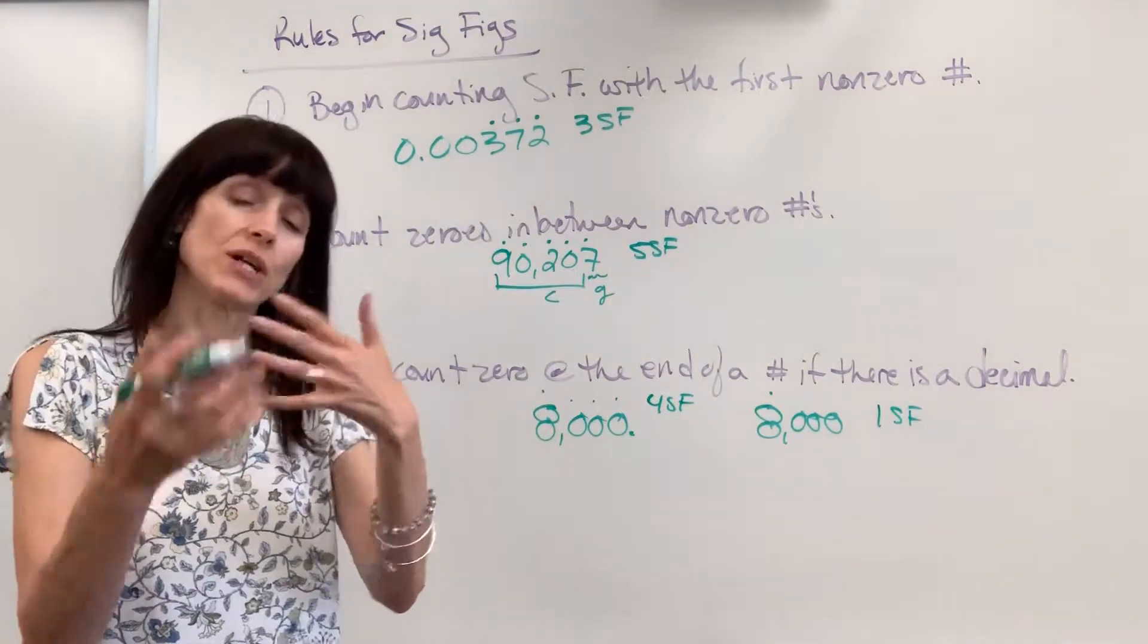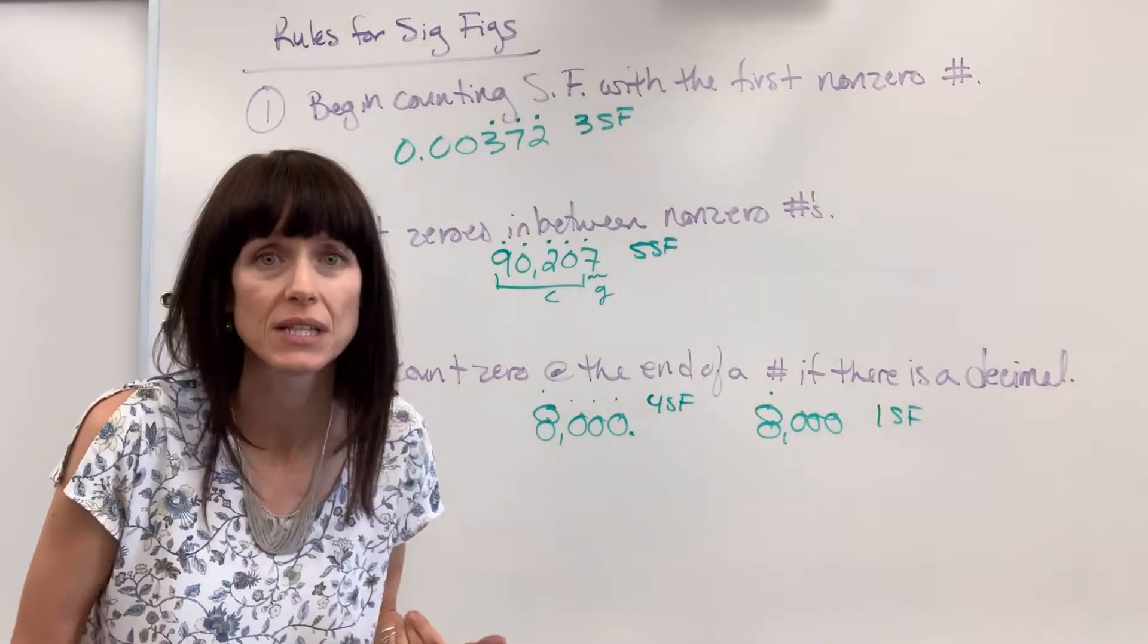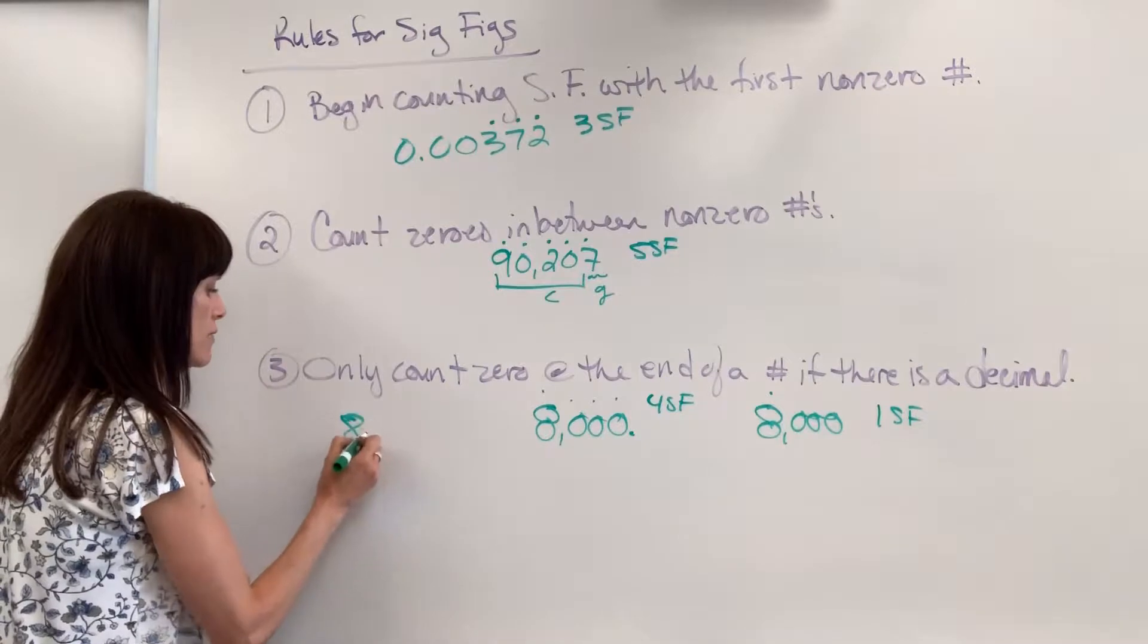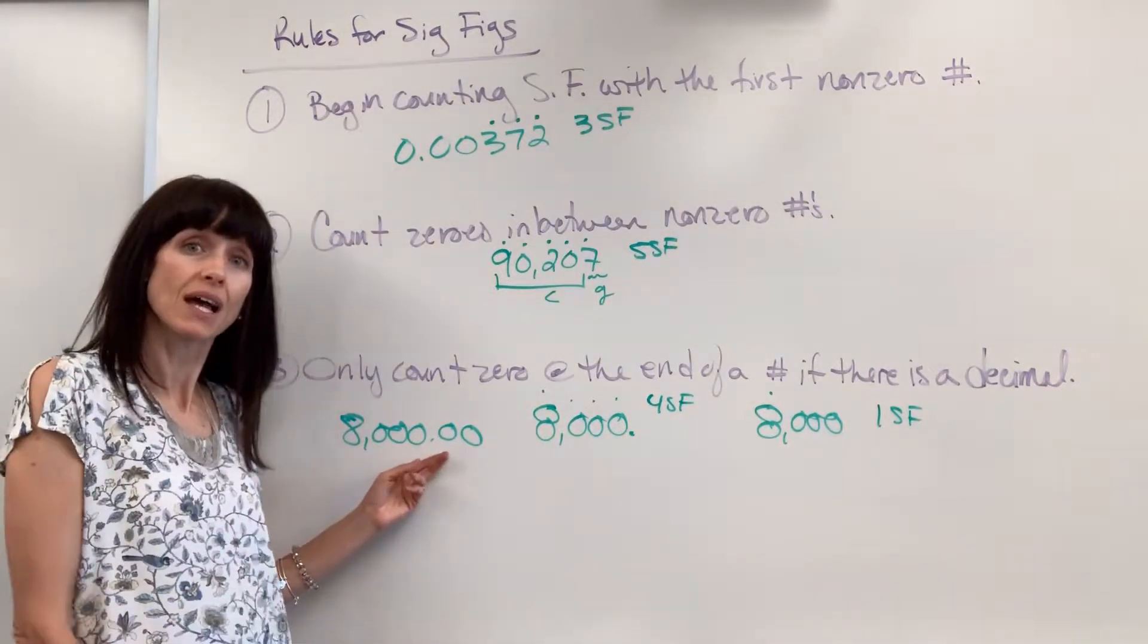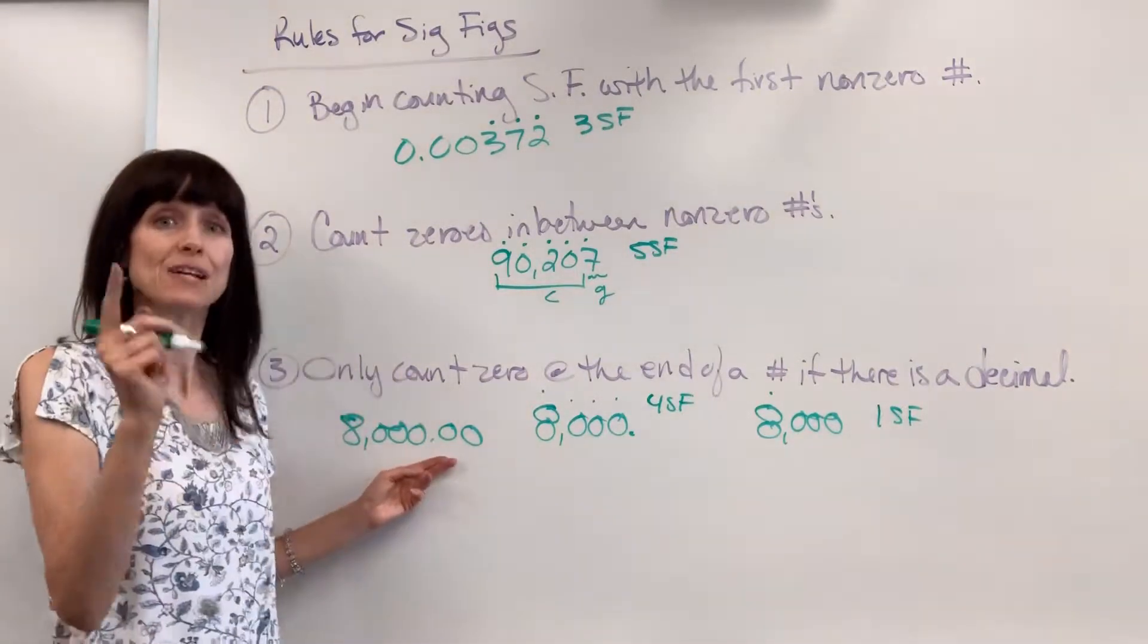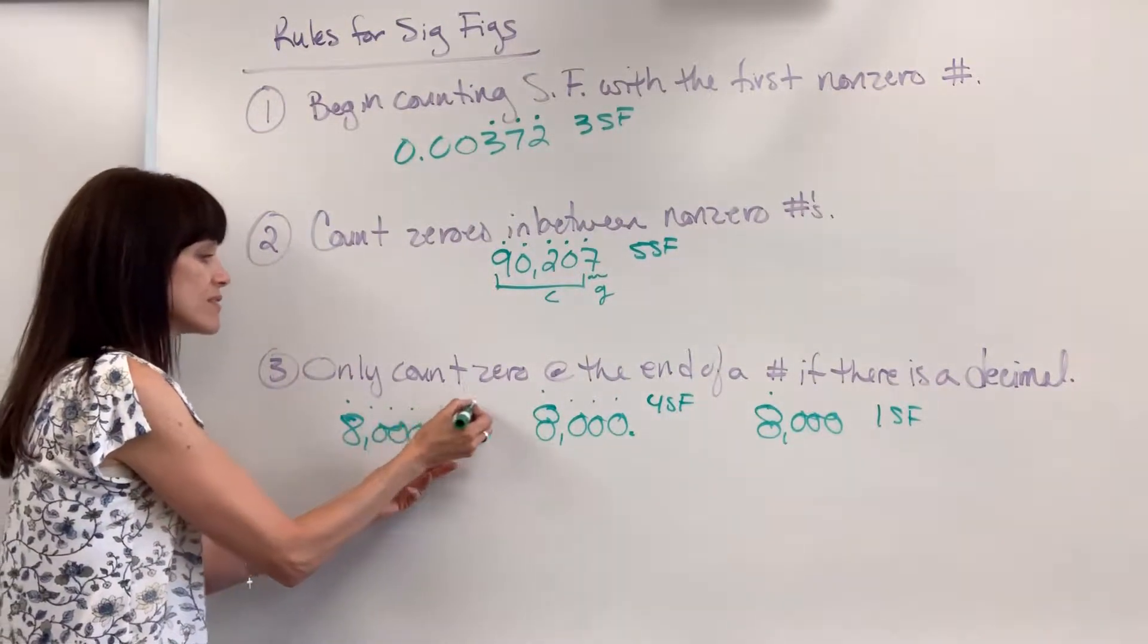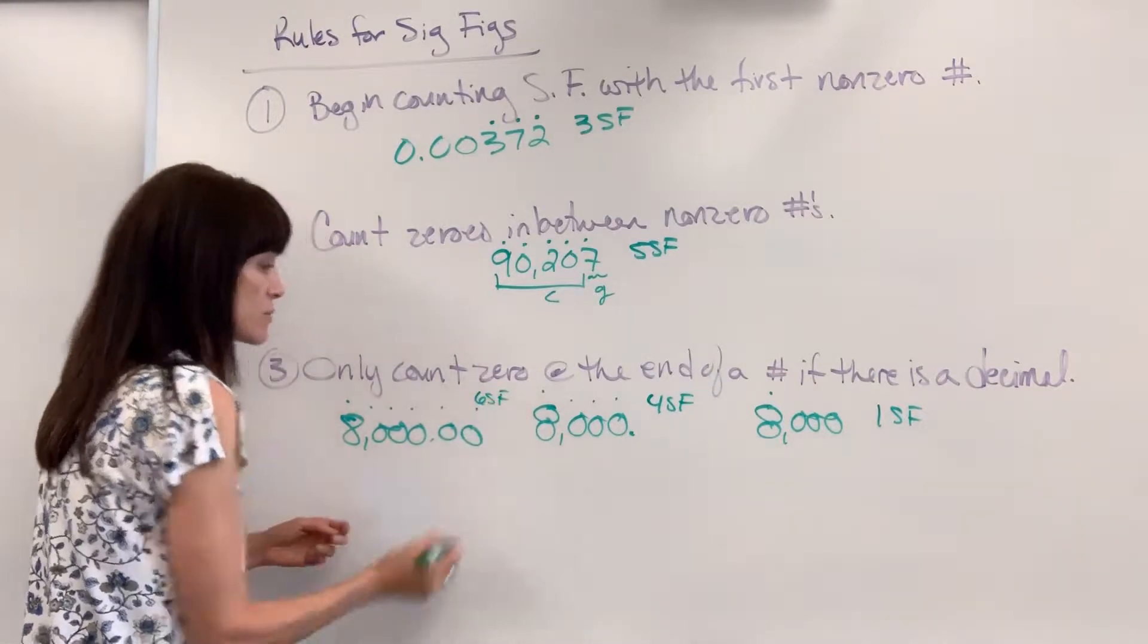Now, this is a common question that students will ask me. Well, what if there's zeros before and after the decimal? You can count all of them. Check this out. I've got 8,000.00. There's the decimal. And I can count all of the zeros at the end of a number if there's a decimal. So we've got one, two, three, four, five, six. Six sig figs on this one.